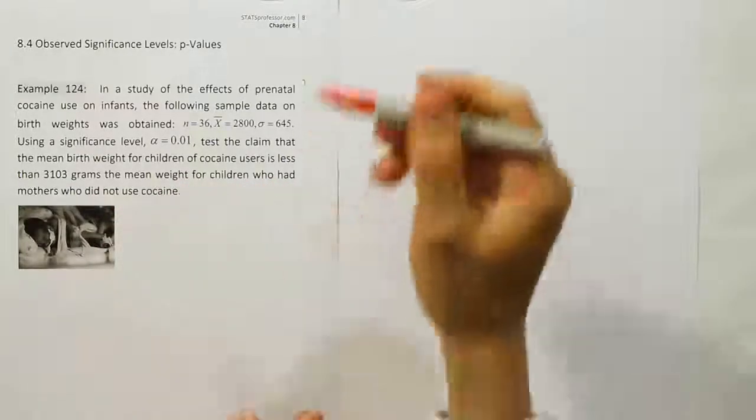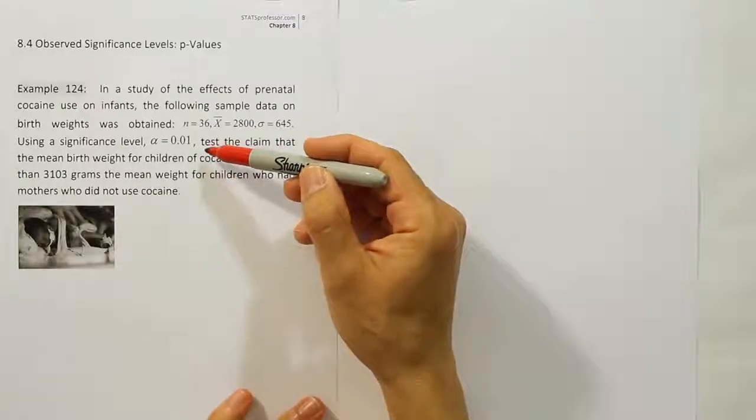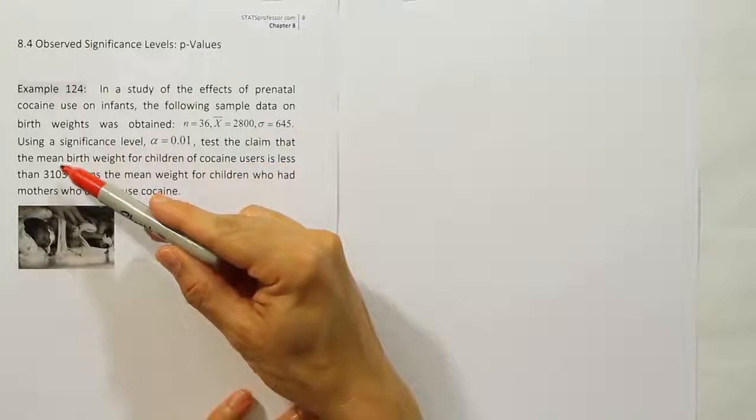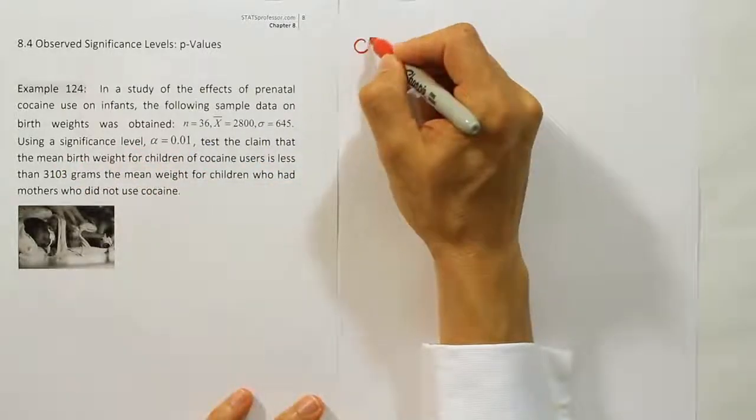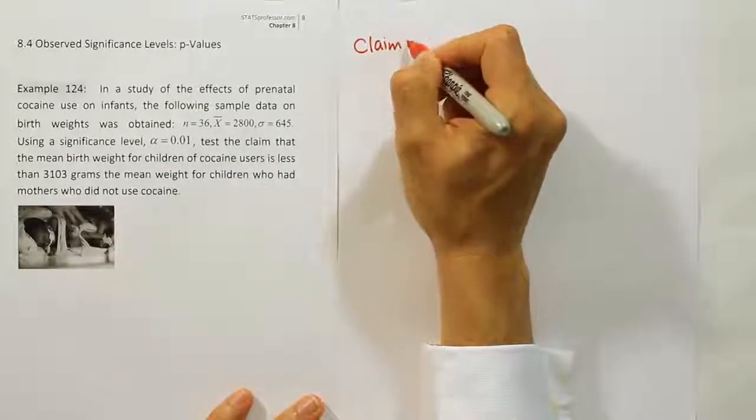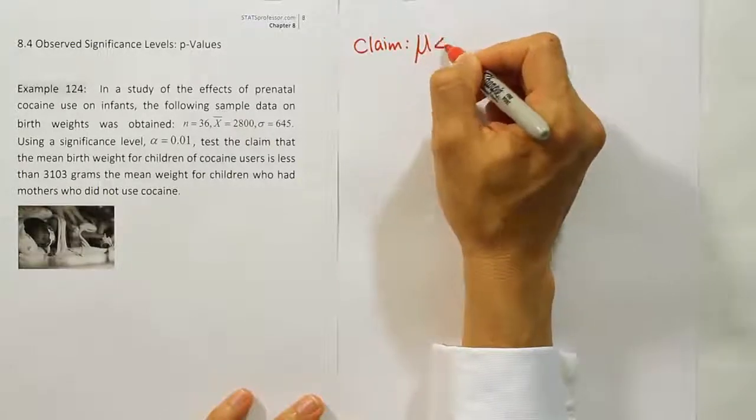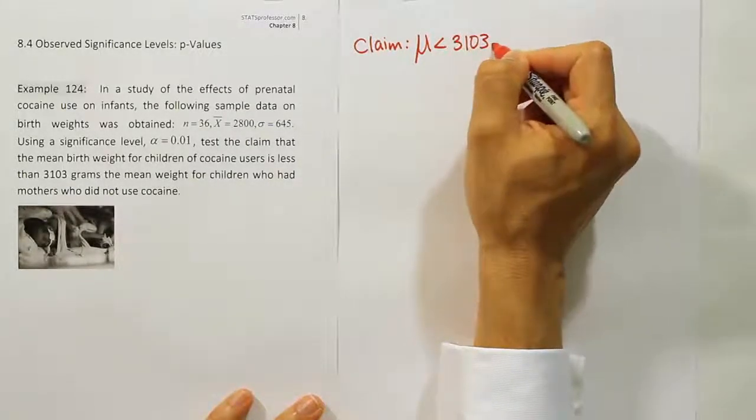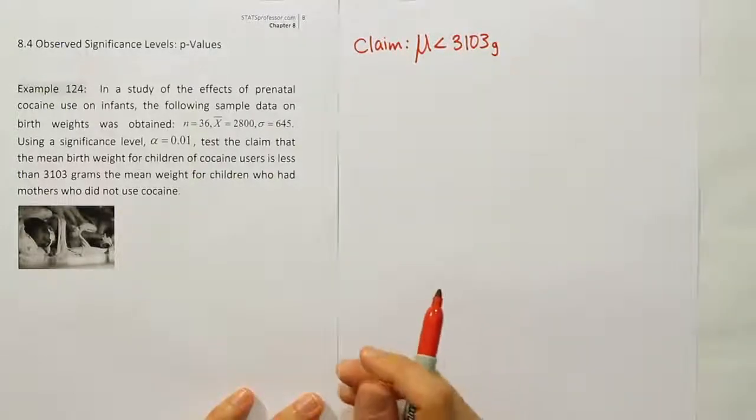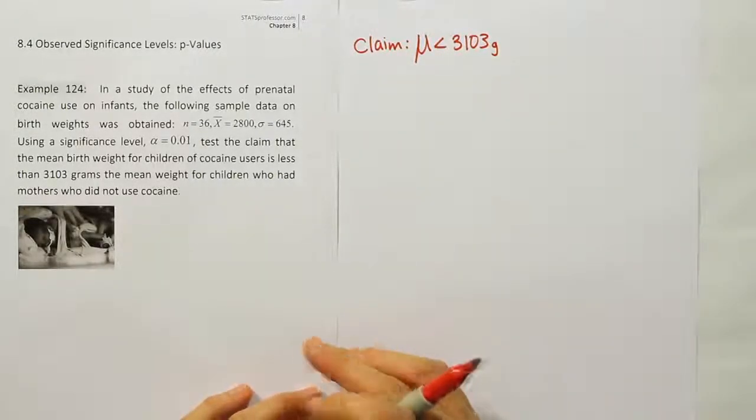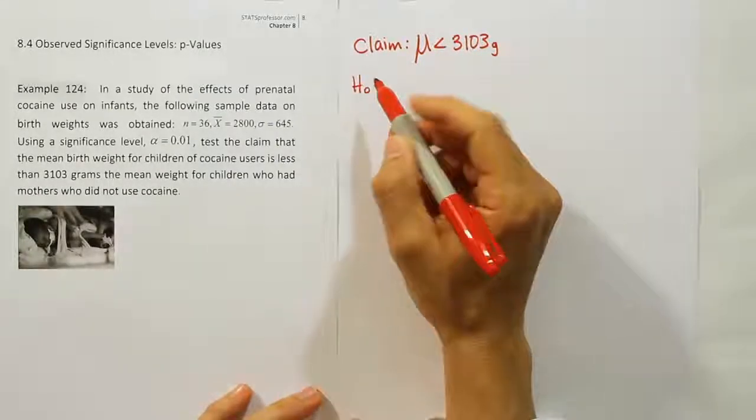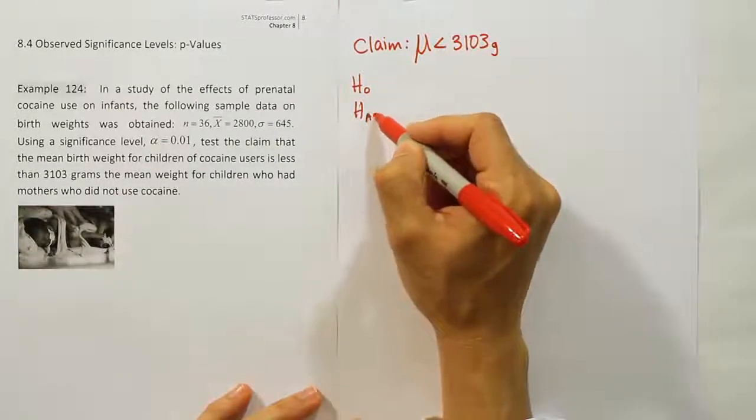So the claim here, first let's make sure we understand that it's a hypothesis test. It says test the claim, so we know it's a hypothesis test and it's about the mean. So we're going to say that our claim in this problem is that the mean is less than 3,103 grams. Then we're going to come up with our null hypothesis and our alternative hypothesis.